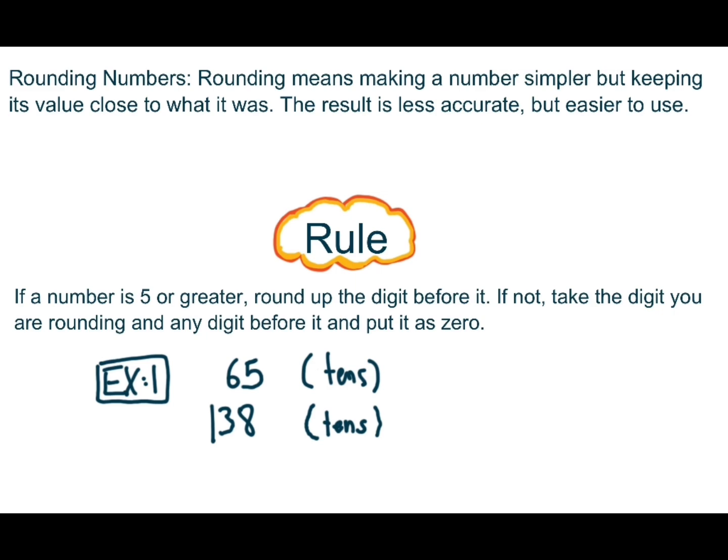What does it mean by rounding numbers? Rounding means making a number simpler, but keeping its value close to what it was. The result is less accurate, but easier to use.